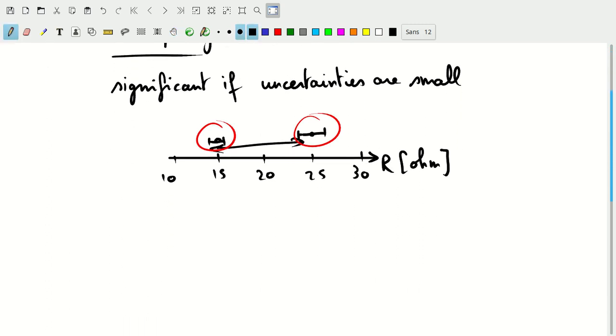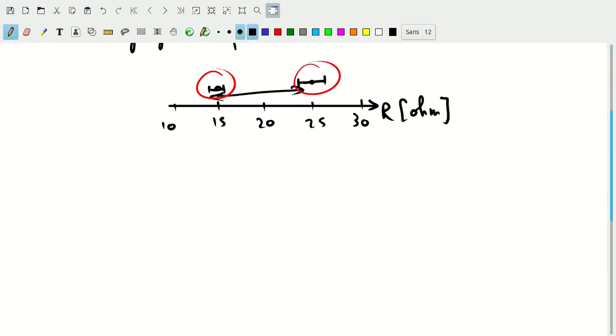So when might this occur? There's a couple of things we might do in labs. One is comparing measured values with accepted values and the other one is comparing two measurements with each other.